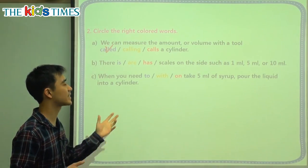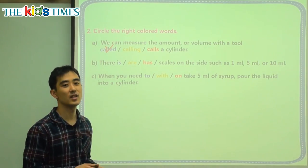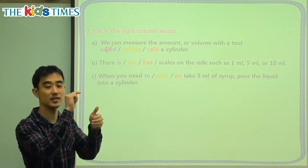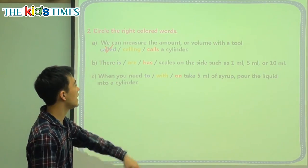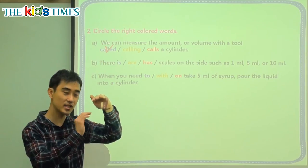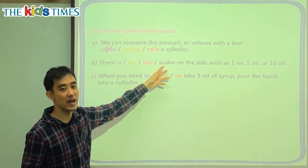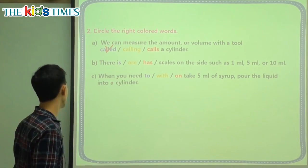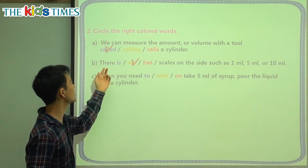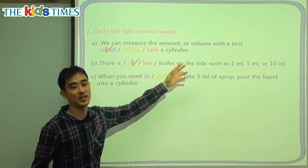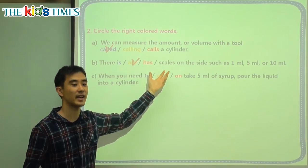Question B: There blank scales on the side, such as 1 milliliter, 5 and 10 milliliters. The numbers on the cylinder are called the scale. Since we don't have only one number — we have many numbers — we say there are scales. If there was only one scale, we would say there is one scale on the side. But here it says scales, so we say there are scales on the side.